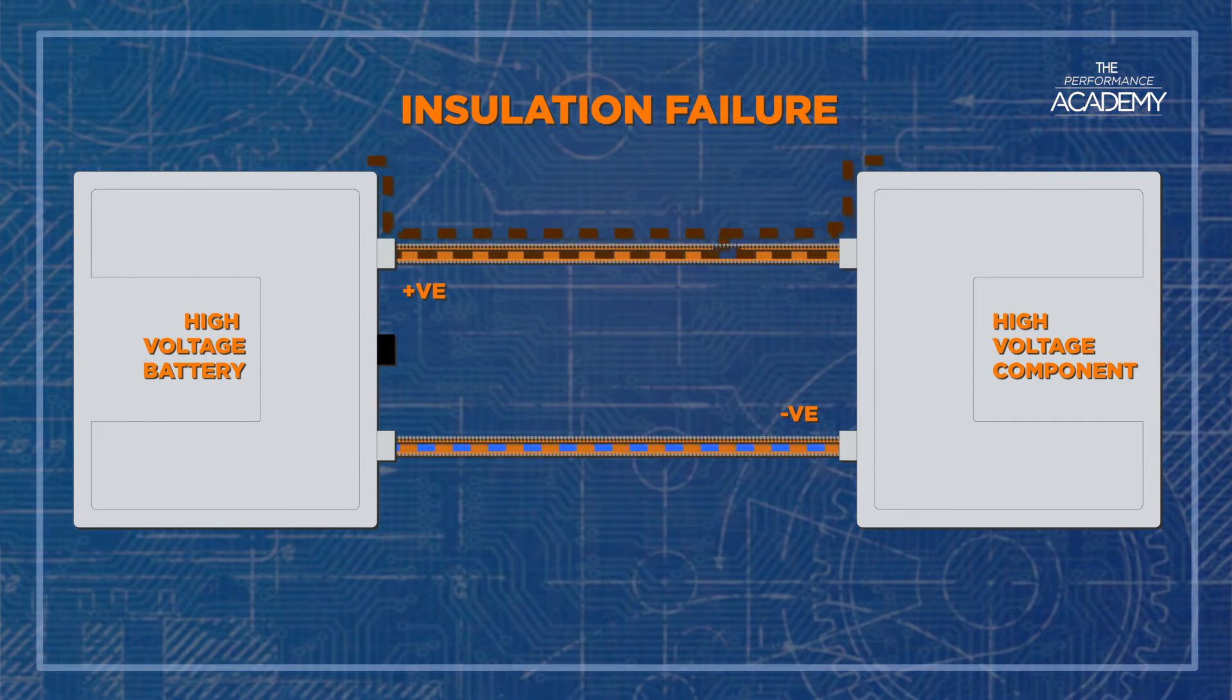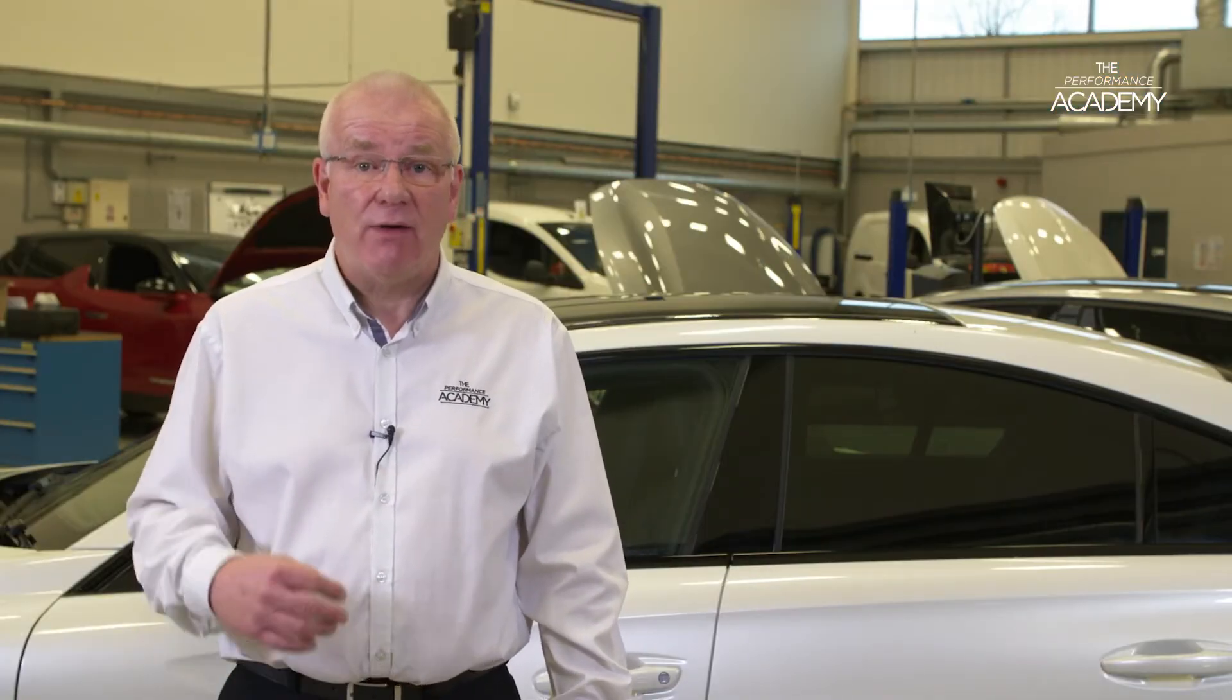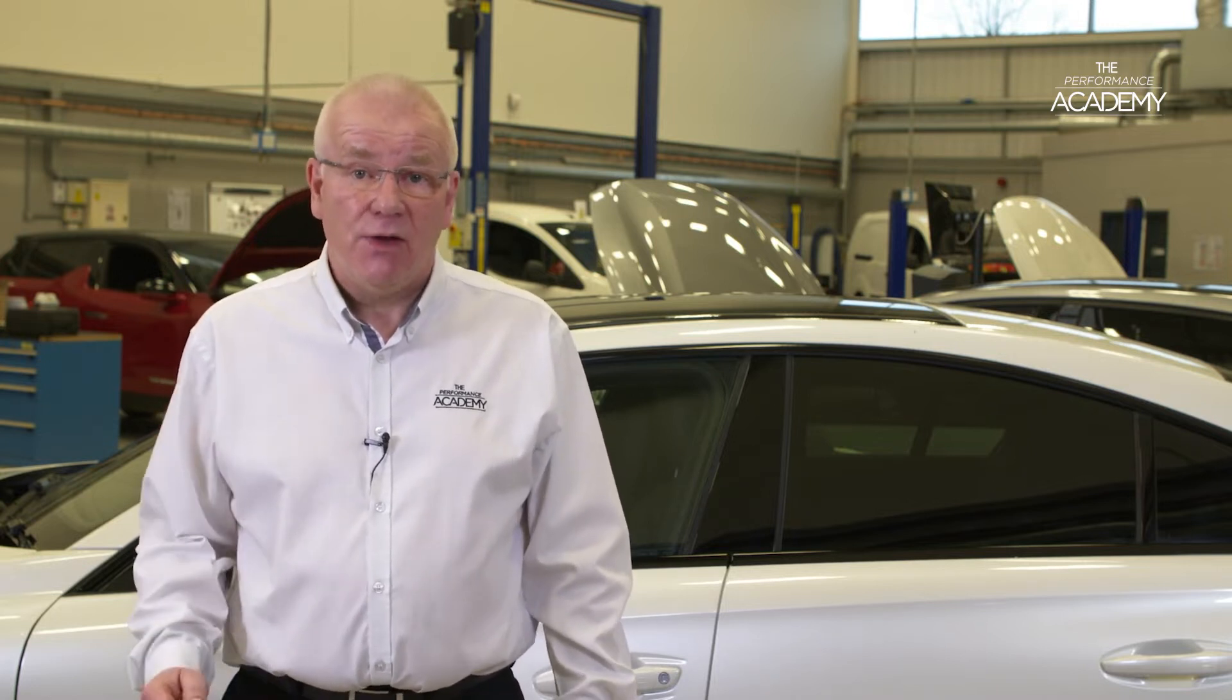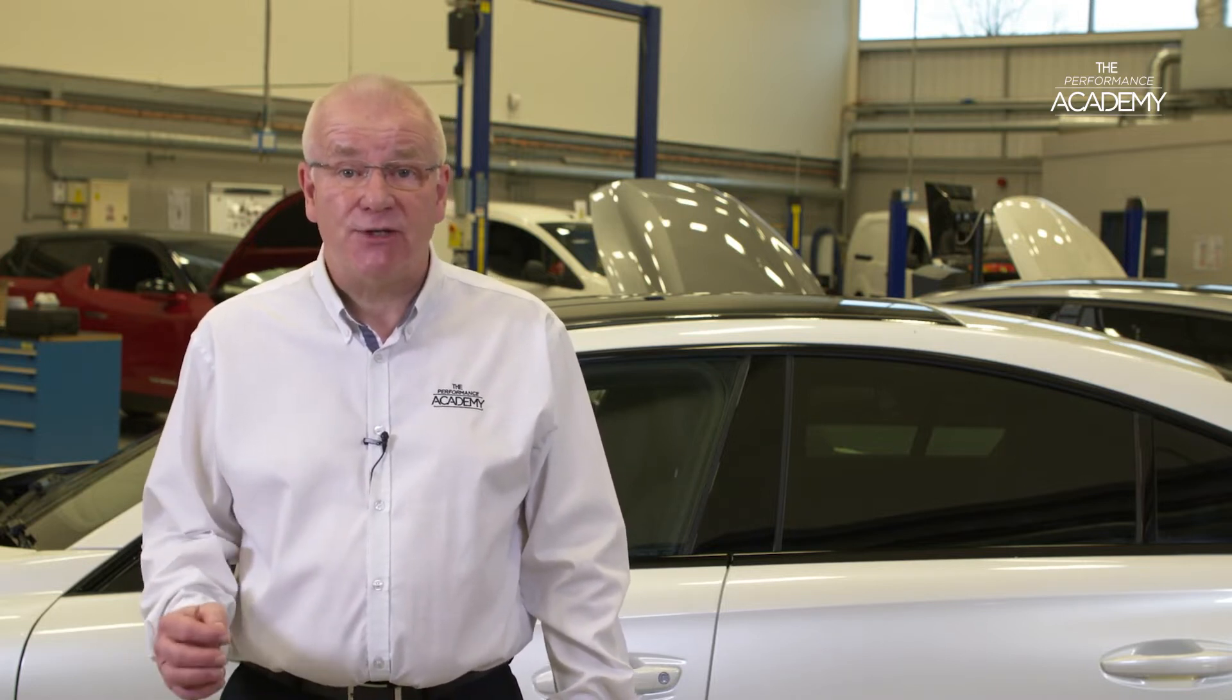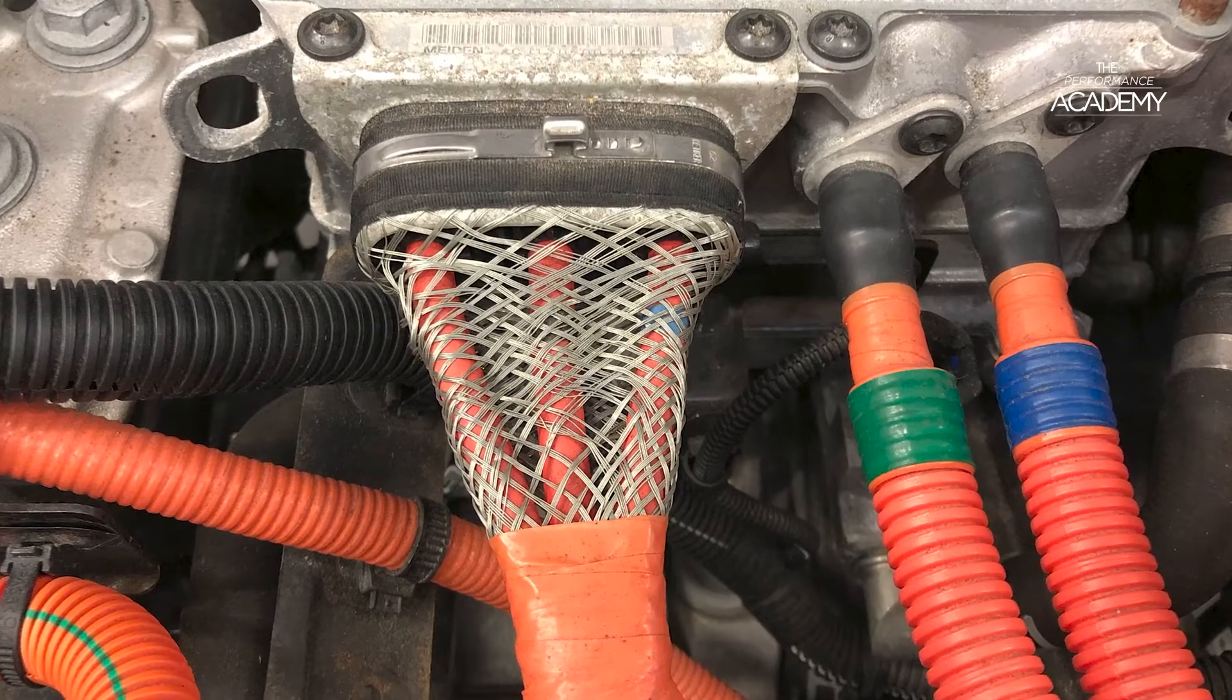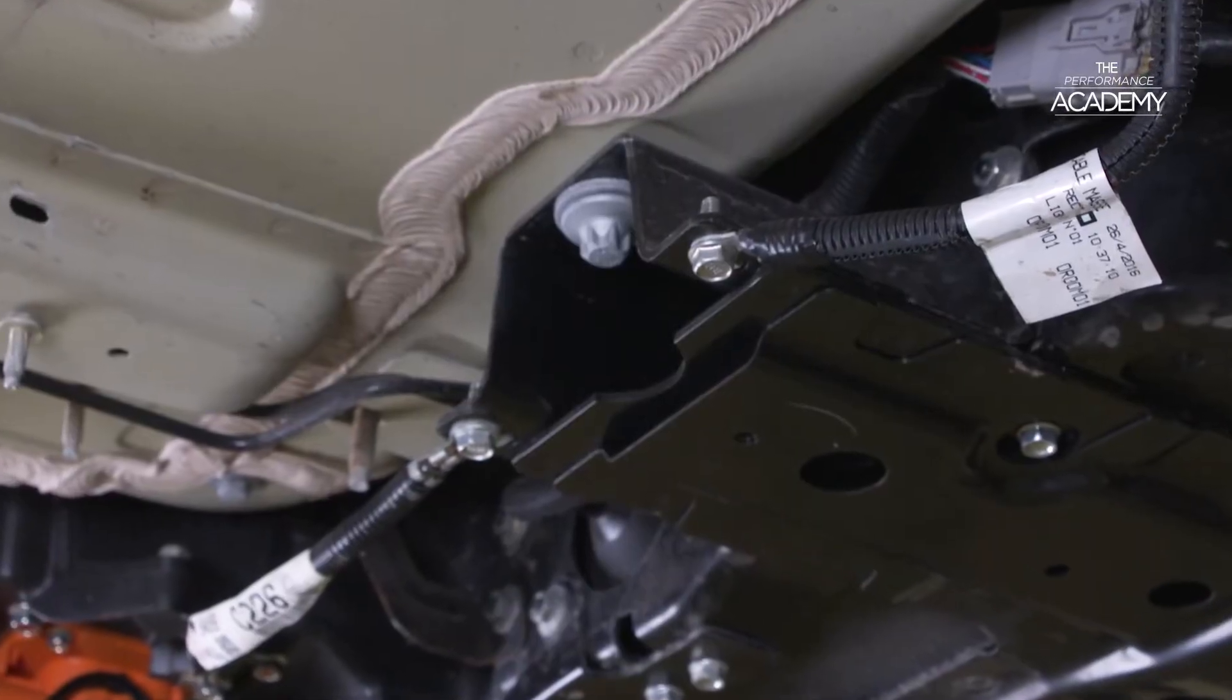The next obvious question is how can a metal shield or screen around the high voltage circuit be classified as insulation? Surely it should be non-conductive. The answer is that the supplementary insulation has more than one function. The screen is connected to the body earth of the vehicle by equipotential bonding straps.